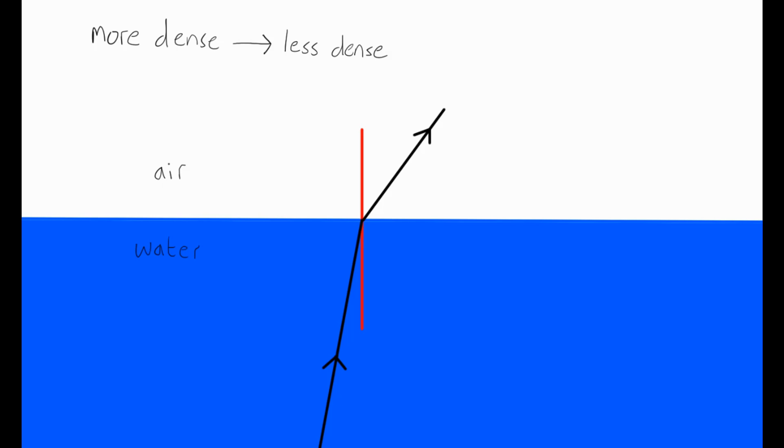And as we've seen in the previous videos, when light goes from a more dense substance into a less dense substance, it refracts away from the normal line. So the ray of light doesn't just carry straight on, it turns away from the normal line.